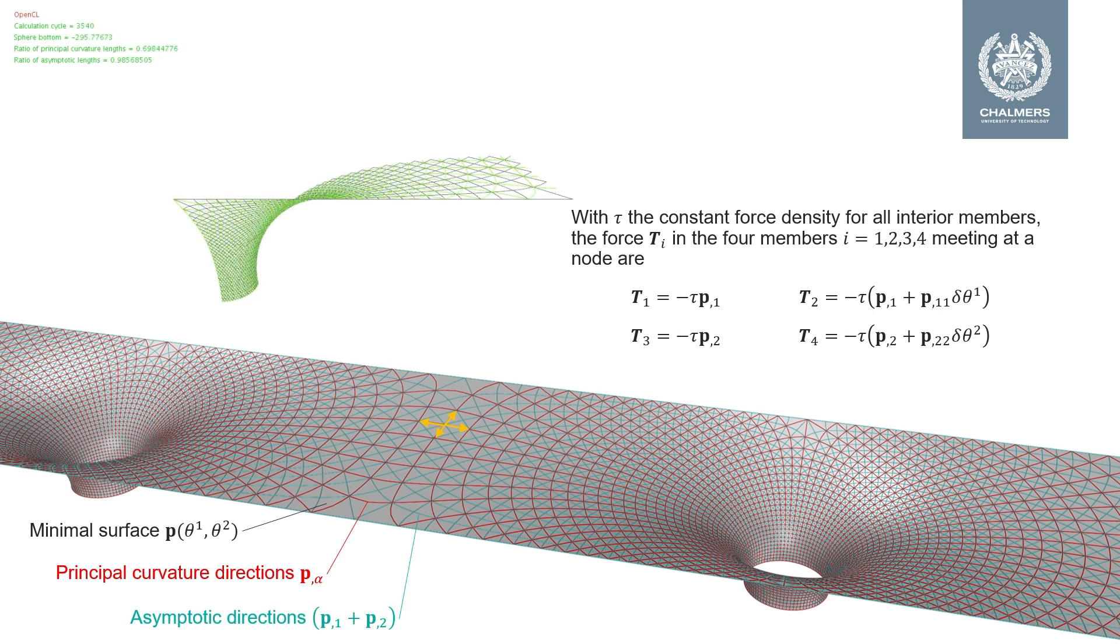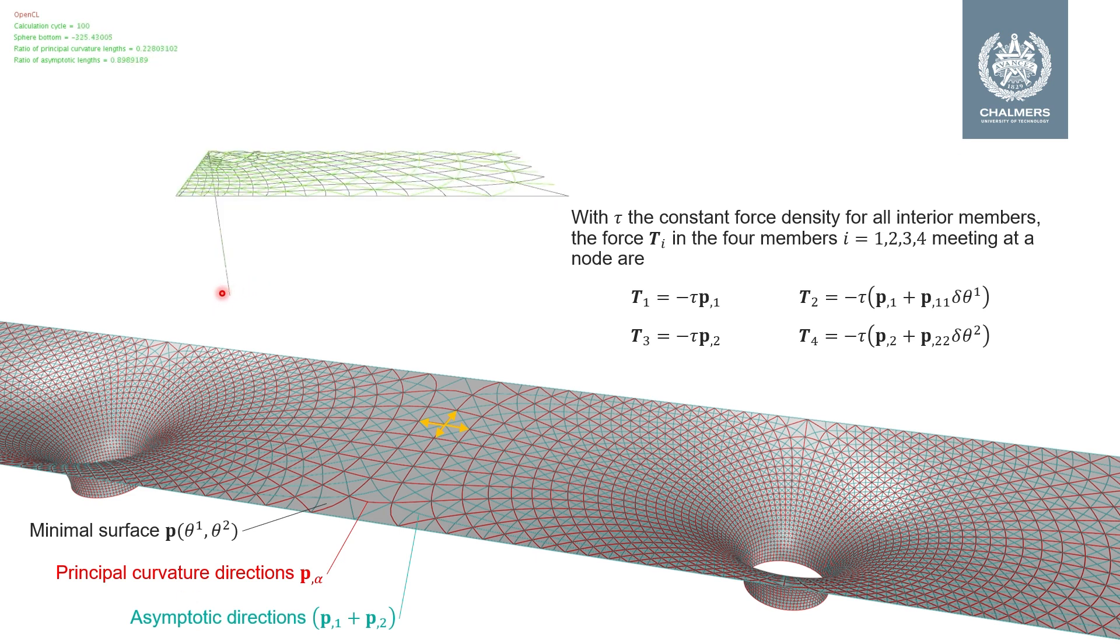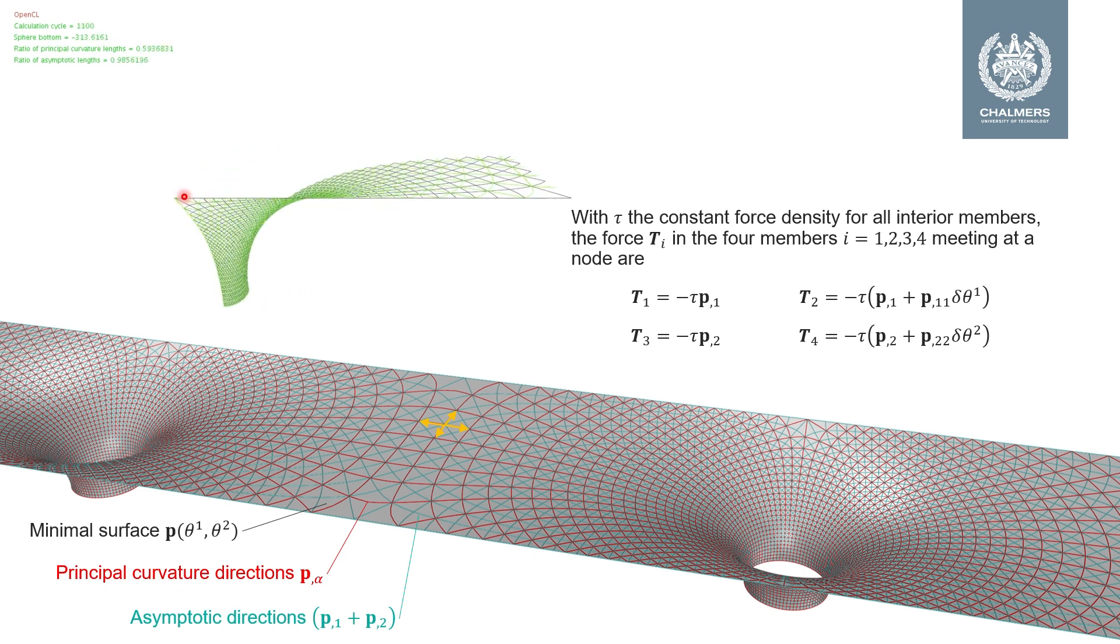In addition to moving the nodes around during the form-finding, we move the position of the support slowly upwards and the free edge slowly outwards. This is a variation of Plateau's problem, where not only the minimal surface through a given boundary is found, but also the boundary itself.